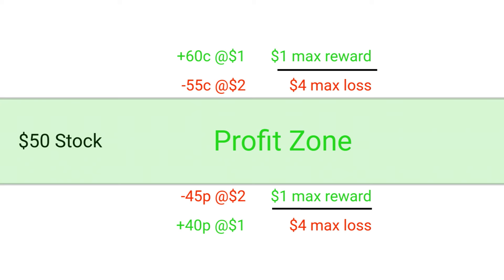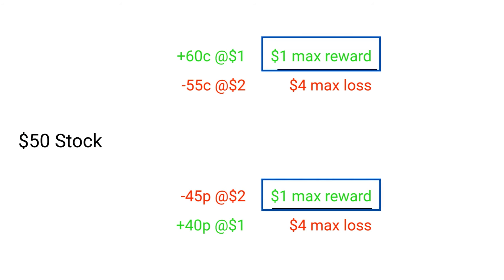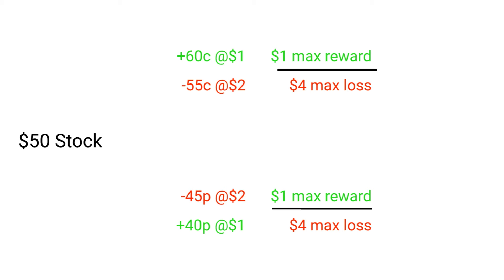This combination is the iron condor. Let's examine the numbers on this trade more closely. We're getting a $1 credit on the bear call spread and a $1 credit on the bull put spread. That means we have a total potential profit on this trade of $2. But what about our loss potential — how much could we lose in this combination?